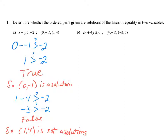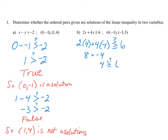Let's do the same thing for part B. We replace x with 4 and y with negative 1 in the original inequality: 2 times 4 plus 4 times negative 1. We check to see if that's greater than or equal to positive 6. Simplifying, we get 8 plus negative 4, which equals 4. Since 4 is not greater than or equal to 6, that is false, and (4, -1) is not a solution.